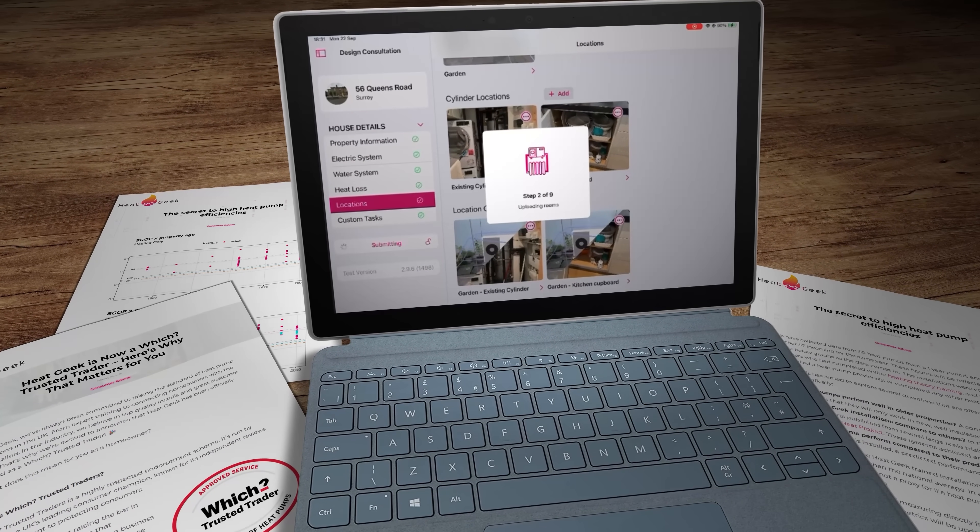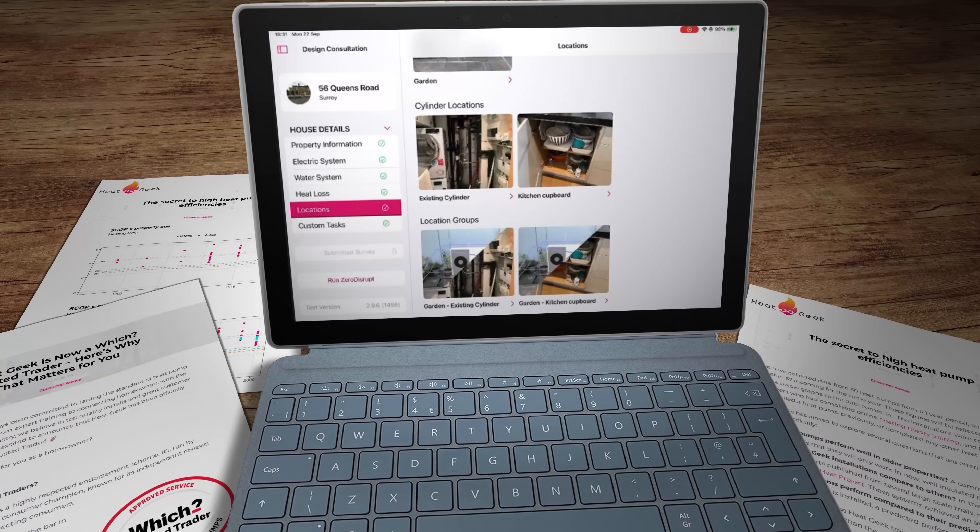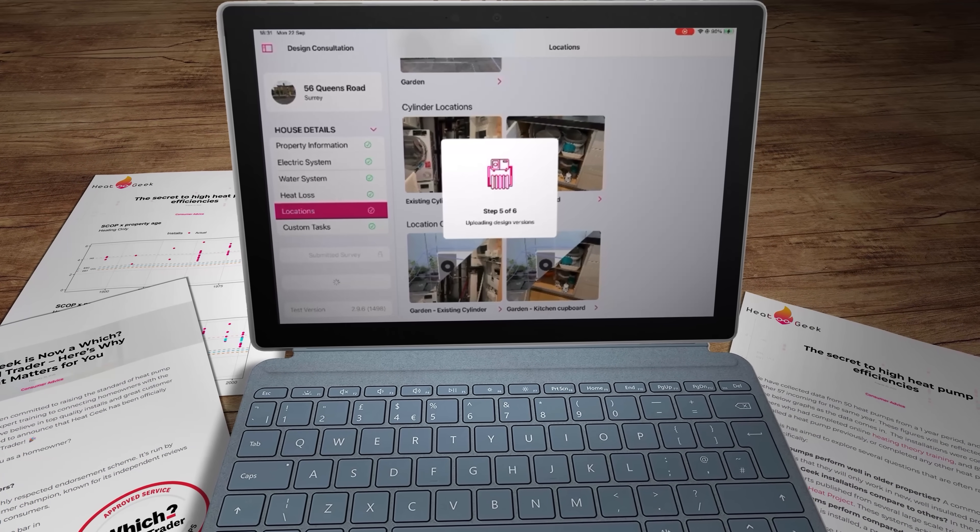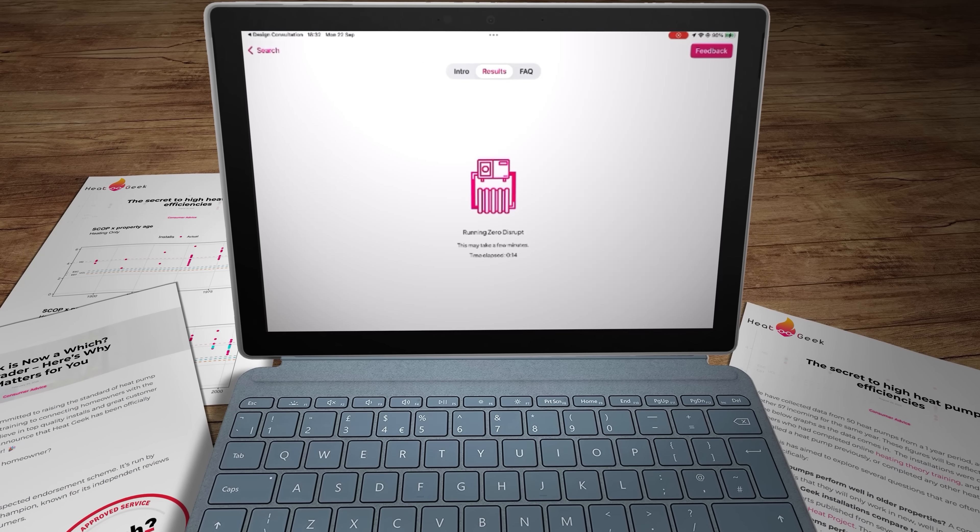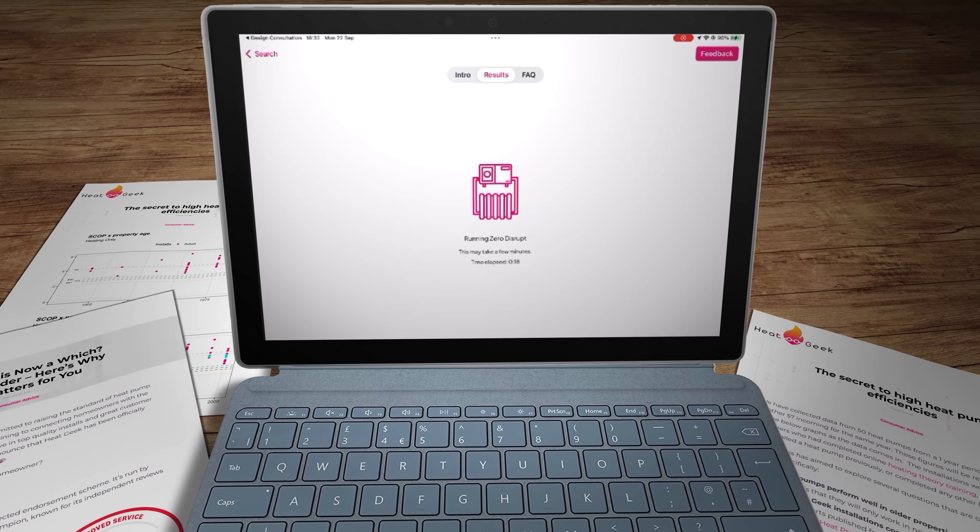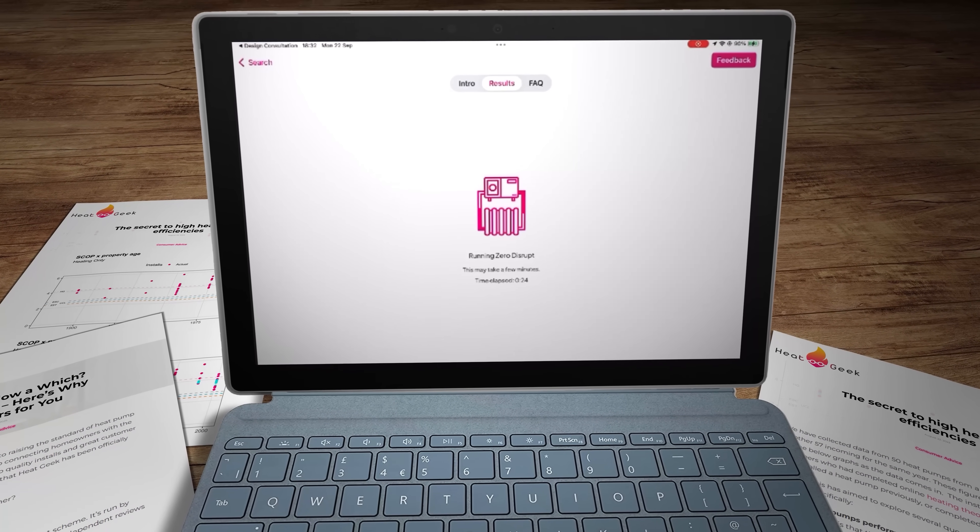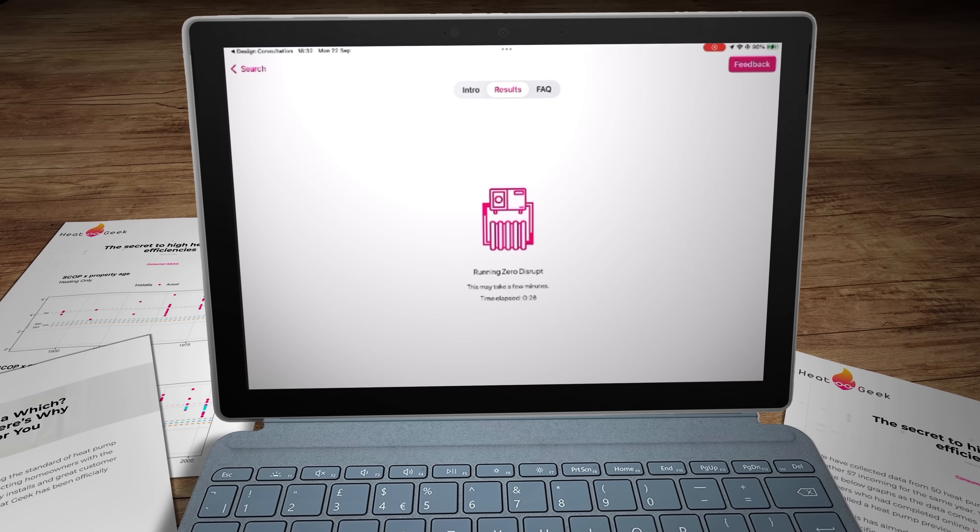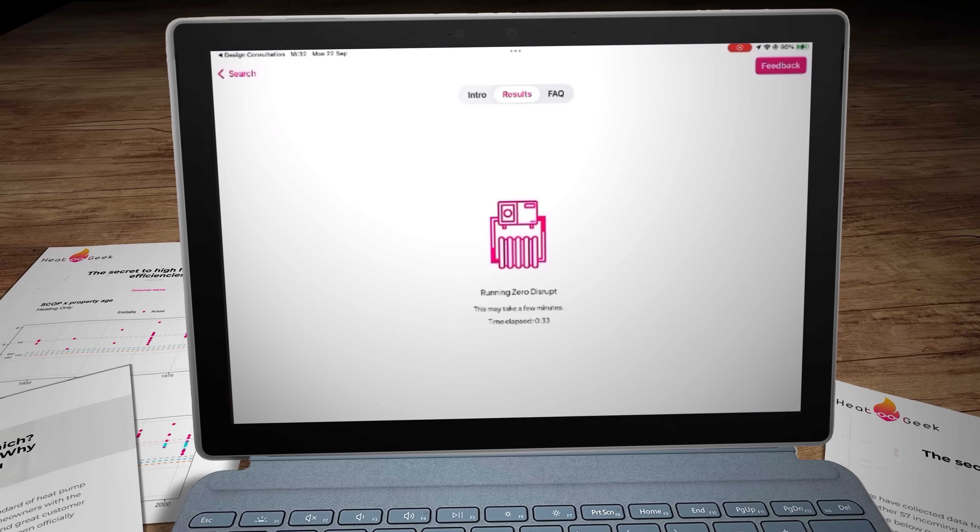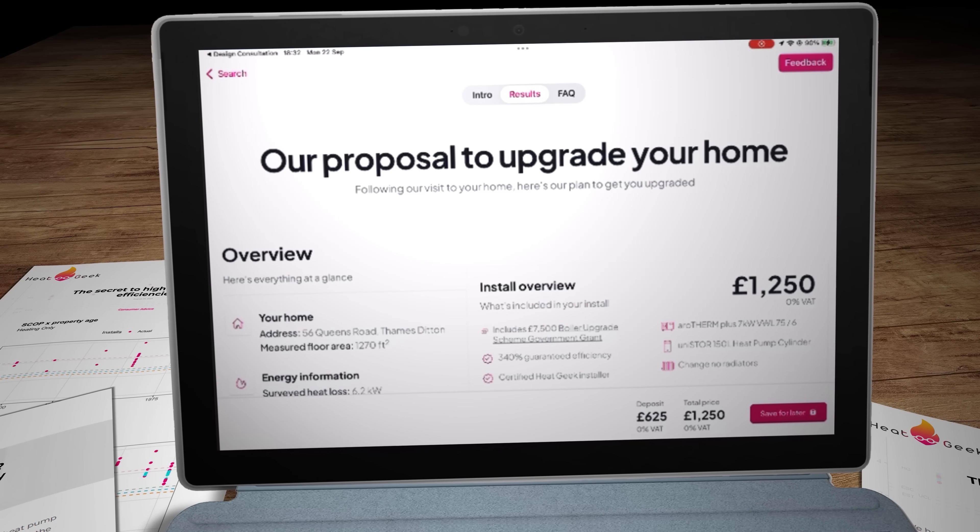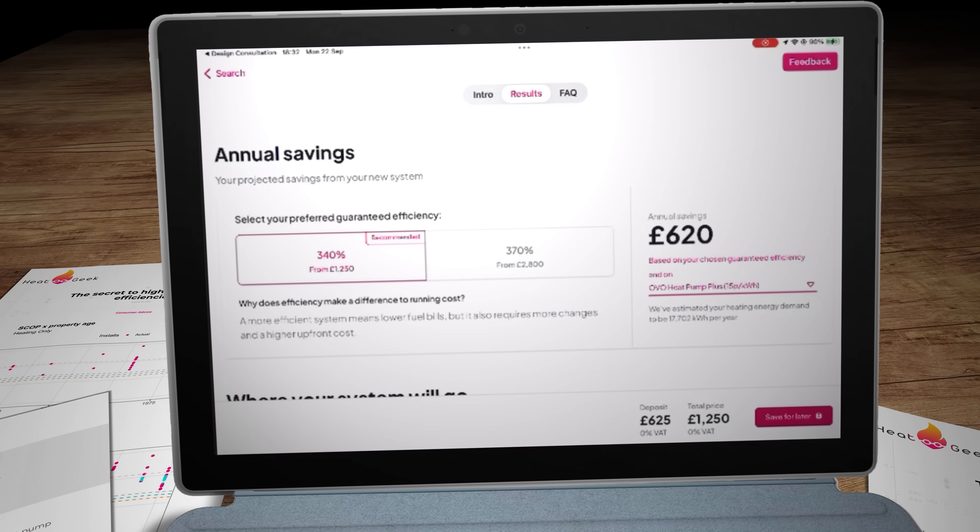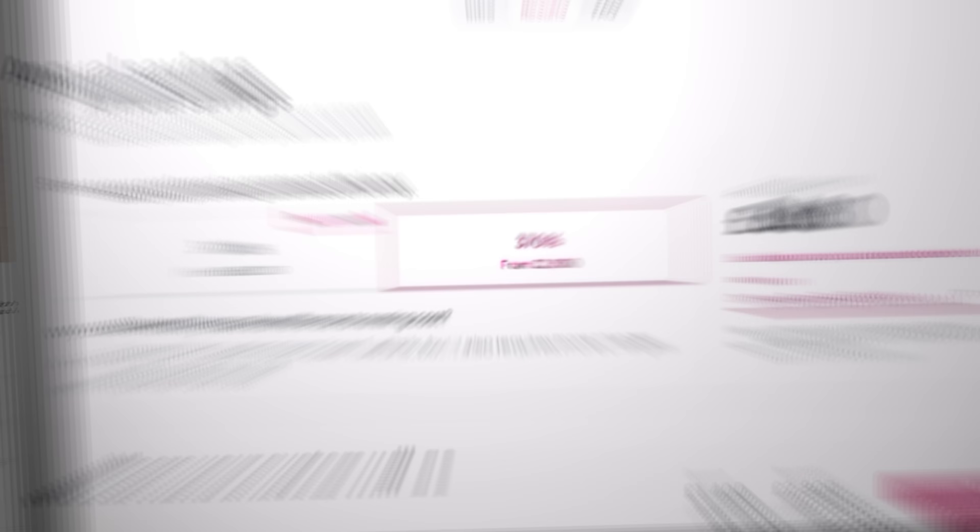Then they use that enormous data set to create a complex algorithmic artificial intelligence system that they call Zero Disrupt. So how does that help efficiency then? Well, it means that instead of an engineer spending hours and hours working through all the unique variables of every single property and doing all the calculations to work out what kind of system each customer requires, they can now simply load the dimensions and fabric of a building into the Zero Disrupt AI system and it will output the optimal combination of efficiency, installation price, and running costs tailored precisely to a customer's home.